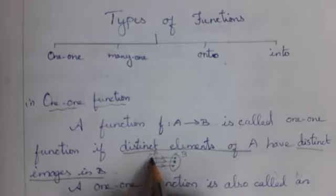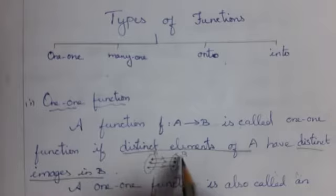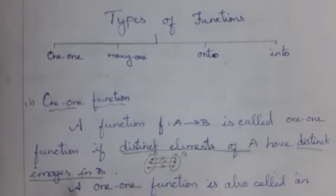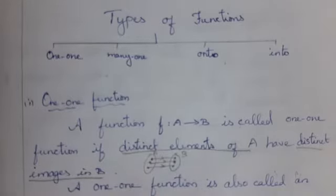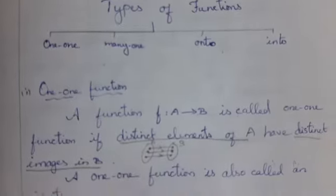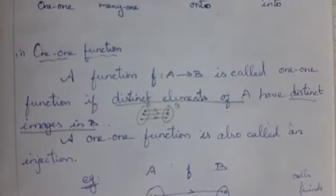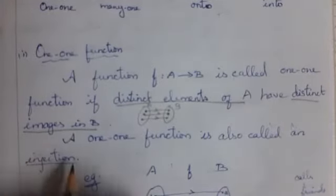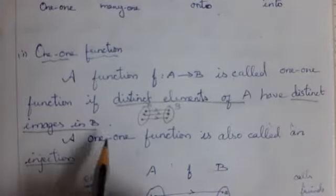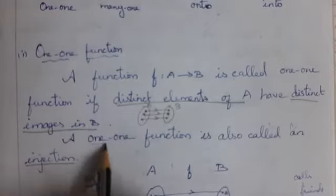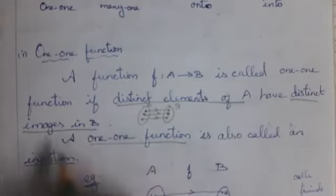Distinct elements of A have distinct images. One more thing: one-one function is also called an injection.